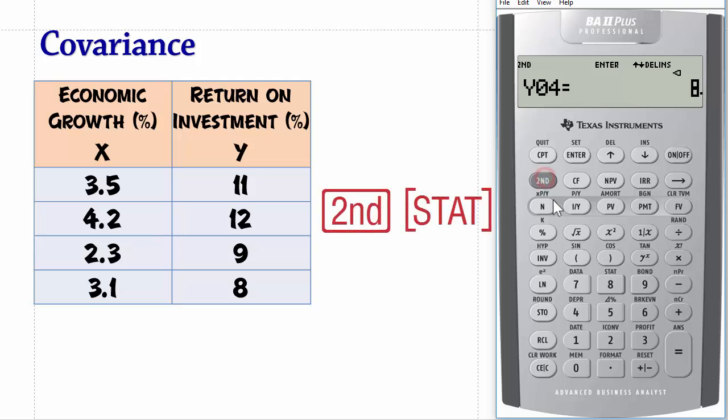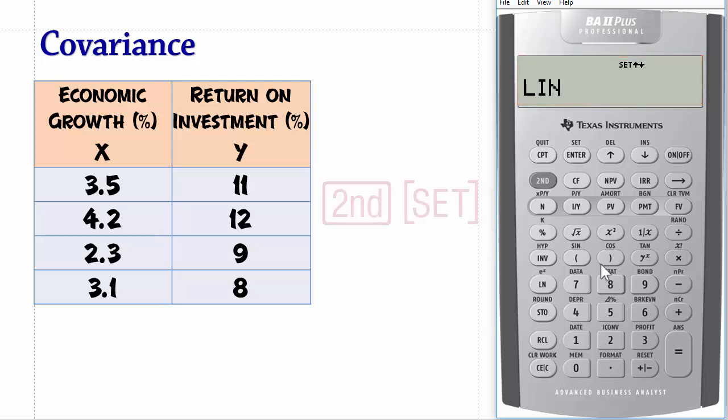Next press 2nd stat to reveal the regression stats. By default, the BA2PLUS shows LIN for linear regression stats. If LIN is not displayed, press 2nd set repeatedly until LIN is displayed.